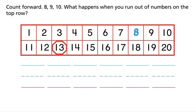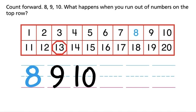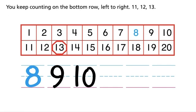Count forward. 8, 9, 10. What happens when you run out of numbers on the top row? You keep counting on the bottom row, left to right.